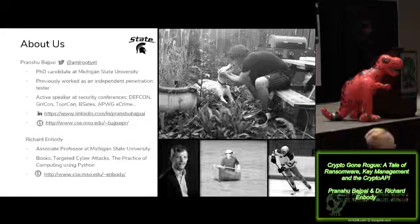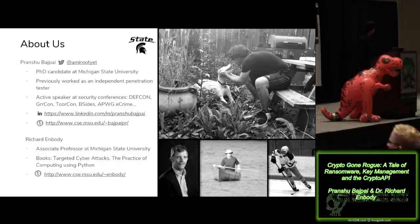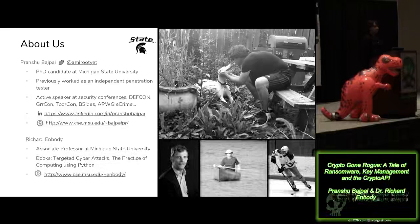So a little bit about us. I'm Pranshu Bhashpayee. I'm a PhD candidate at Michigan State University. The dog pictured is my one-year-old puppy — she's a Dalmatian, her name is Gabby. All the work that I do, I do with my advisor, Dr. Nbuddy. When he's not in his office, you can find him surfing, canoeing, or playing hockey.